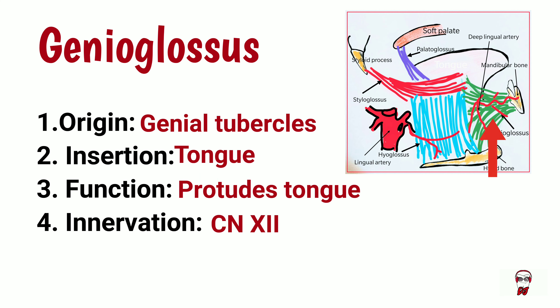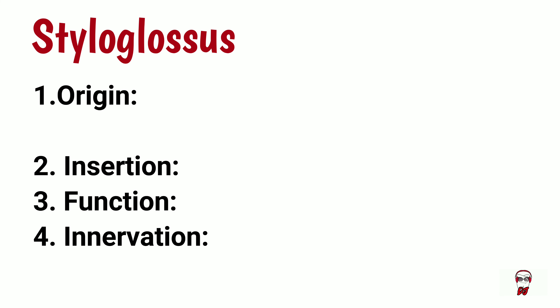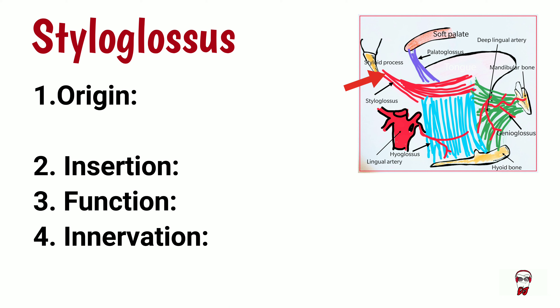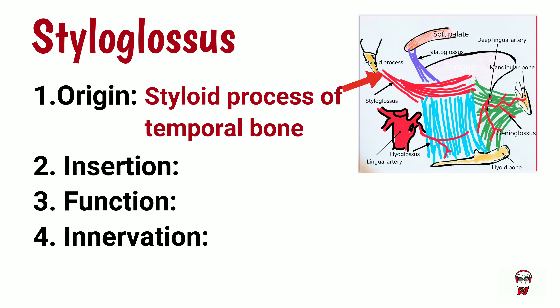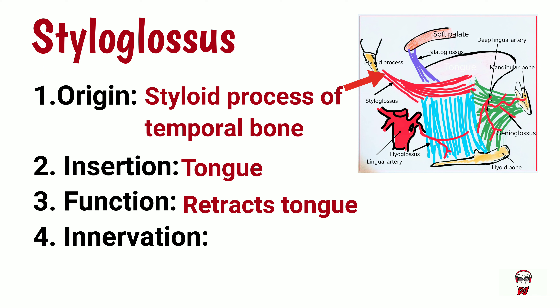Moving on to the styloglossus muscle, it originates from the styloid process of the temporal bone and inserts into the side of the tongue. It is located behind the tongue and functions to retract the tongue.